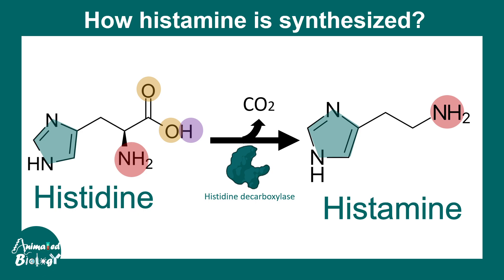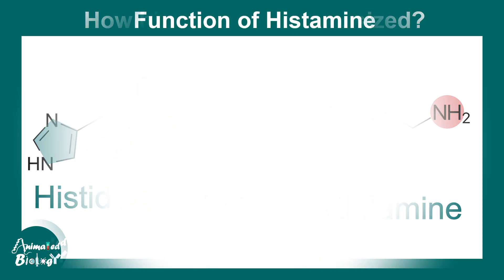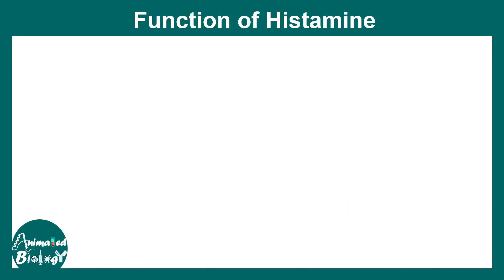Histamine is produced from the amino acid histidine. The enzyme that plays a role in this process is known as histidine decarboxylase. A carboxyl group is removed from histidine to generate histamine, a biologically active amine.